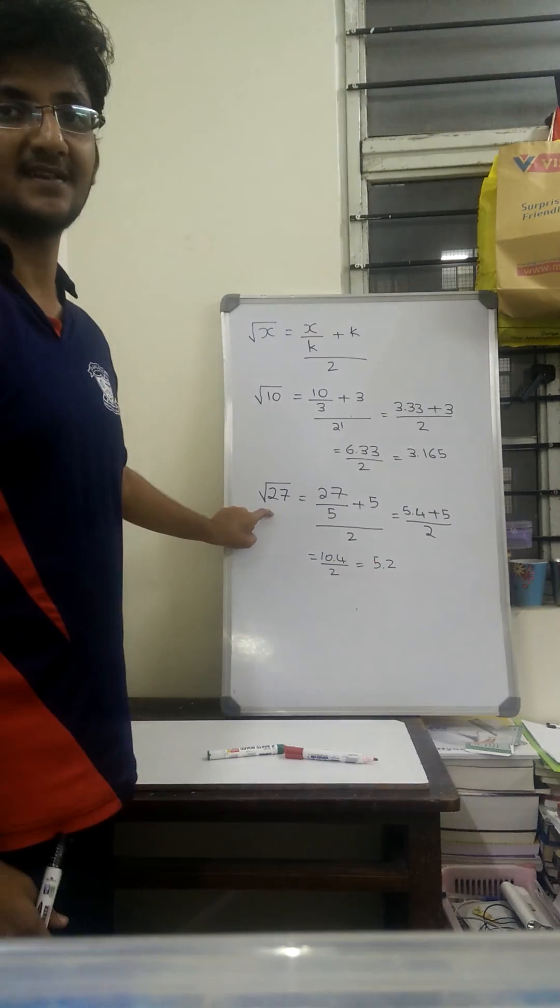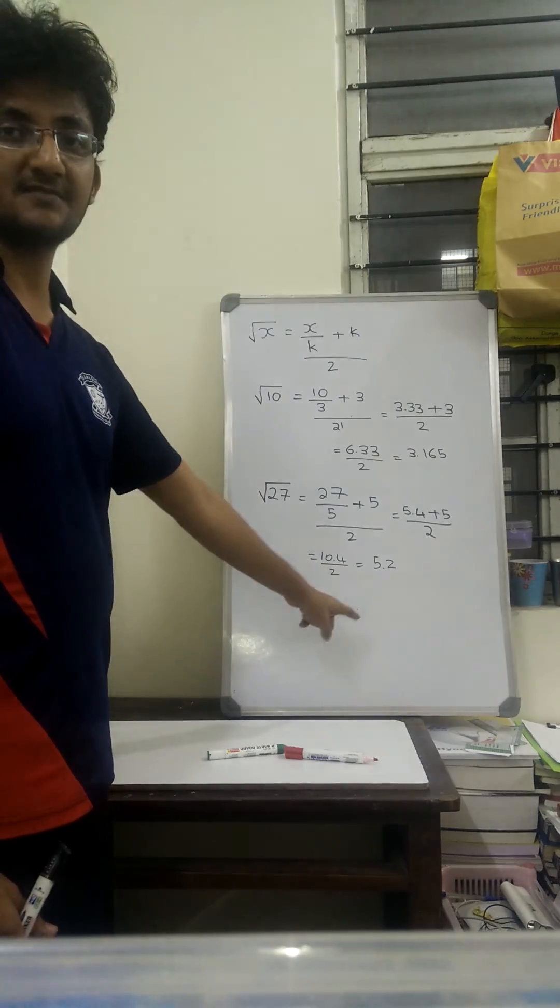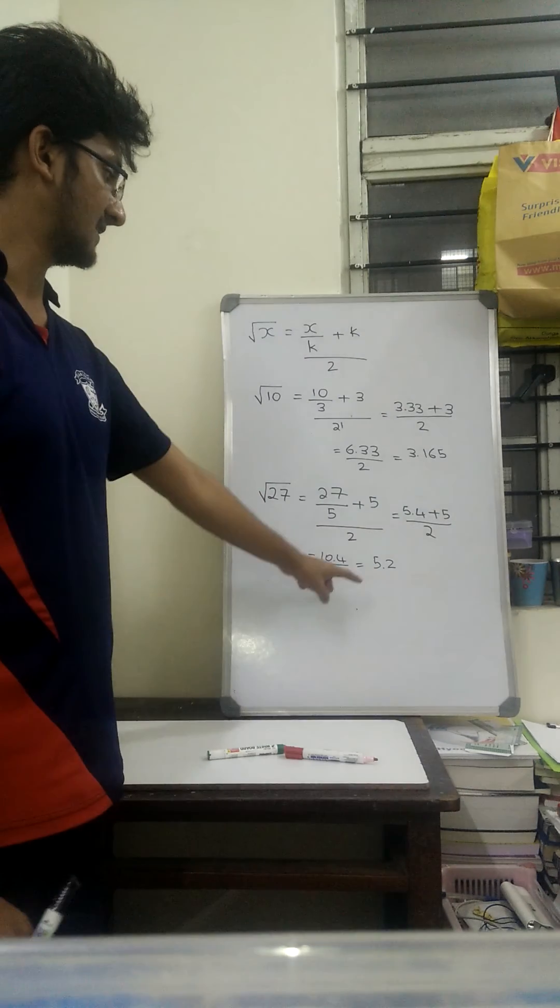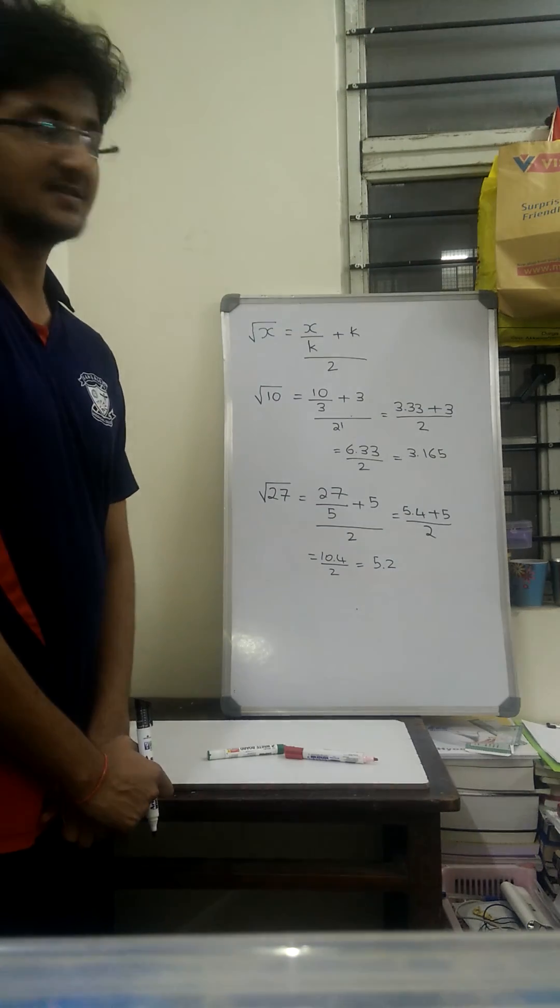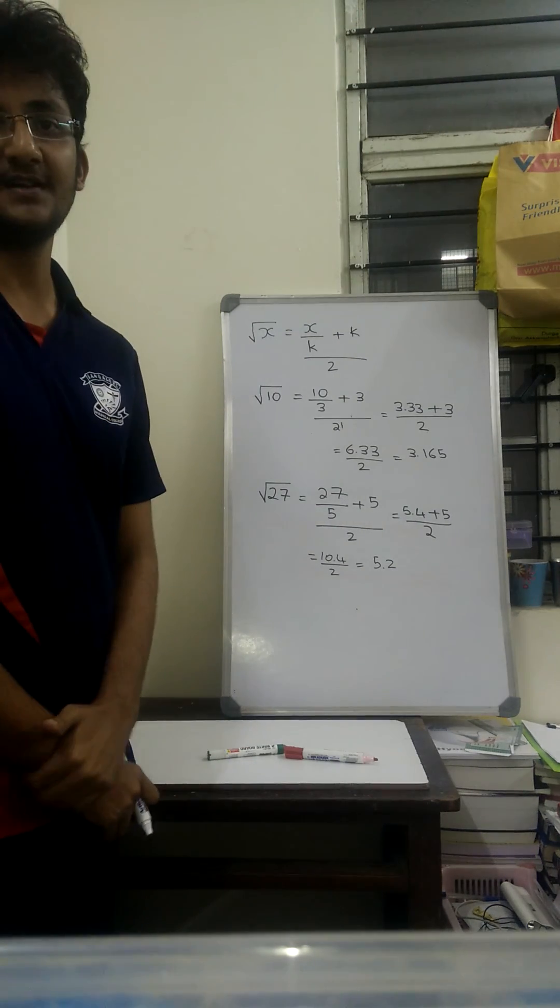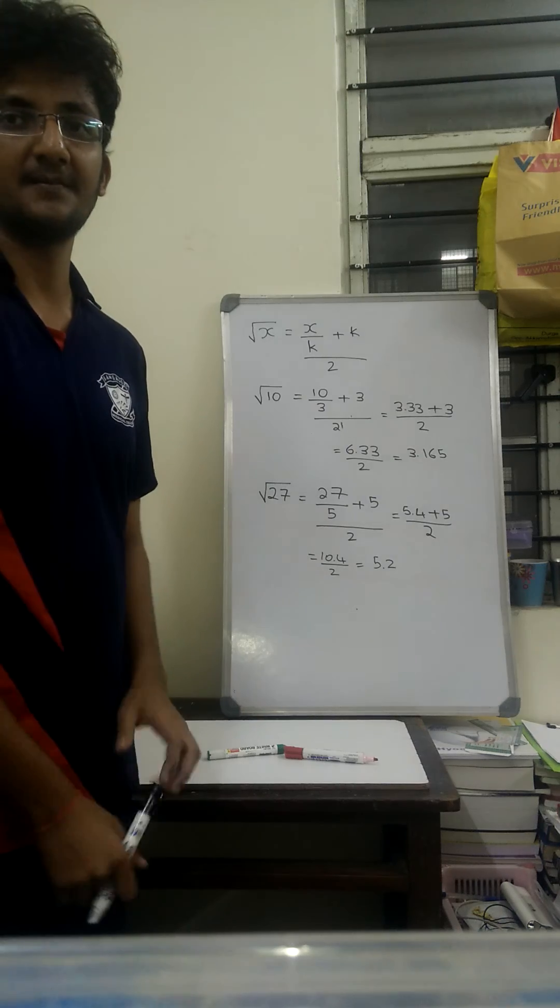The actual value of square root of 27 is 5.196 which is very near to 5.2 and for all practical purposes we can use 5.2 as square root of 27. So, in this method we can find square root of any number in a very small time. Thank you.